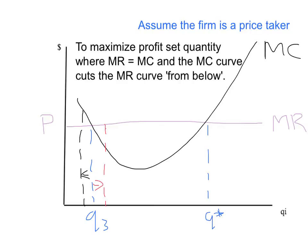So we need to modify our profit-maximisation rule slightly. To maximise profits, set quantity where marginal revenue equals marginal cost — like Q star, but also like Q3 — and the marginal cost curve must cut the marginal revenue curve from below. At Q star, marginal cost comes up from below marginal revenue and then goes above it. In contrast, at Q3, our profit-minimising point, marginal cost cuts marginal revenue from above. So Q star is our profit-maximising quantity: it's where MR equals MC and where MC is cutting MR from below. For those who followed the mathematical videos, this second condition — cutting from below — is just our second-order condition.